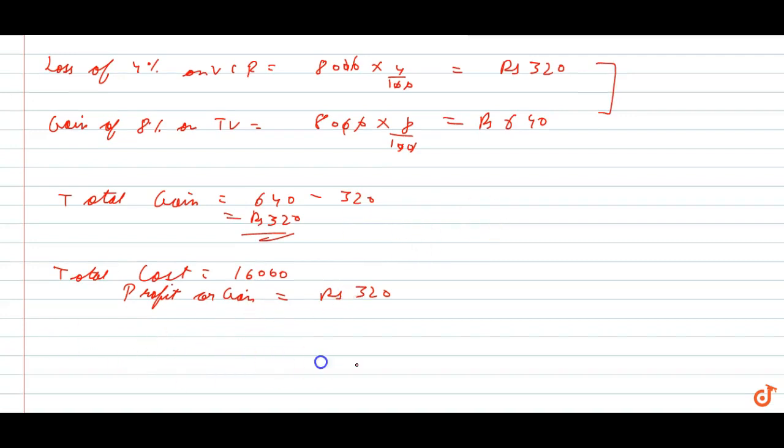So what is the percentage profit? 320 divided by 16,000 into 100 equals 2. 2% gain. So there is 2% profit on the whole transaction.